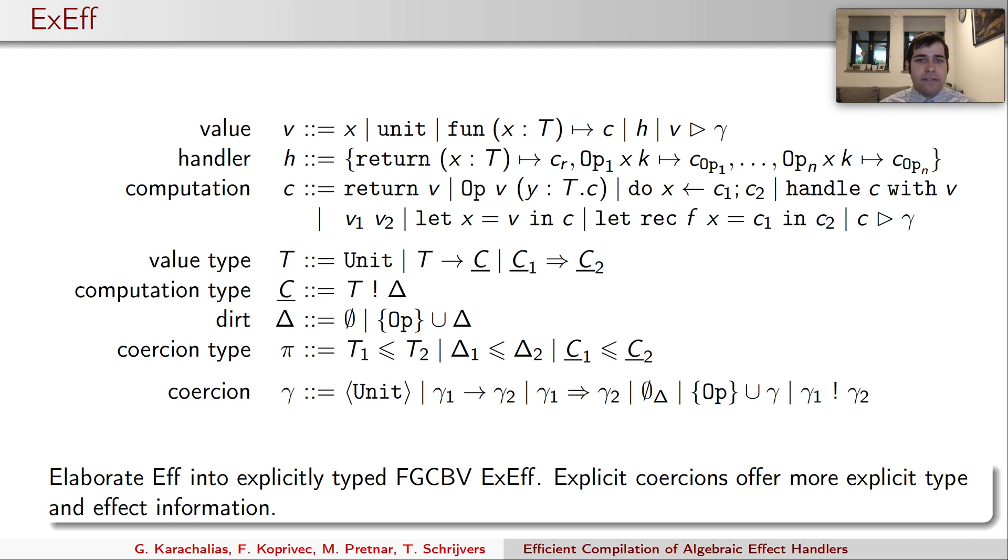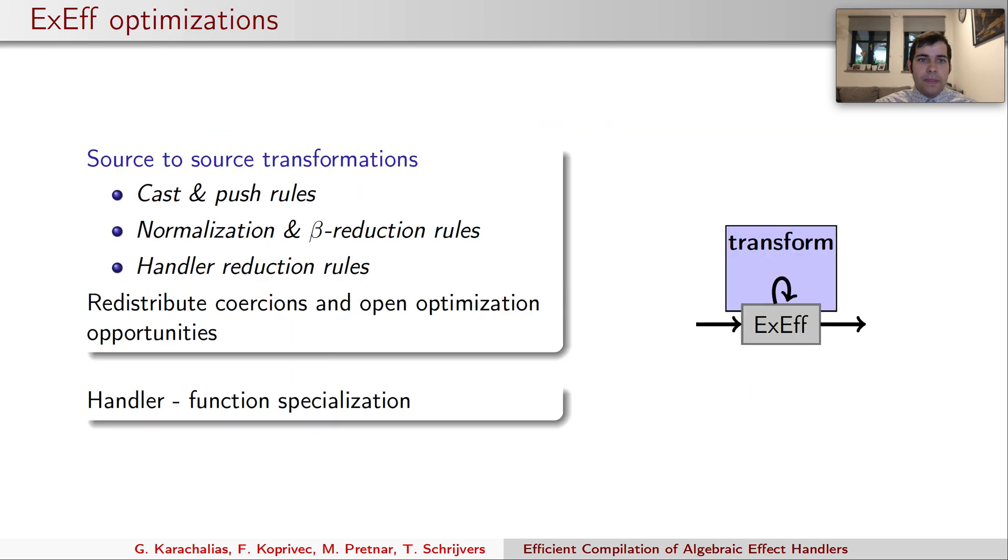The syntax of XF is pretty standard, except that types and coercions are explicit. We have values and value types, computations and computation types, and the computation types are in two parts, the simple types and the possible effects denoted as delta, and we also have coercions that serve as explicit witnesses that a type is a subtype of another.